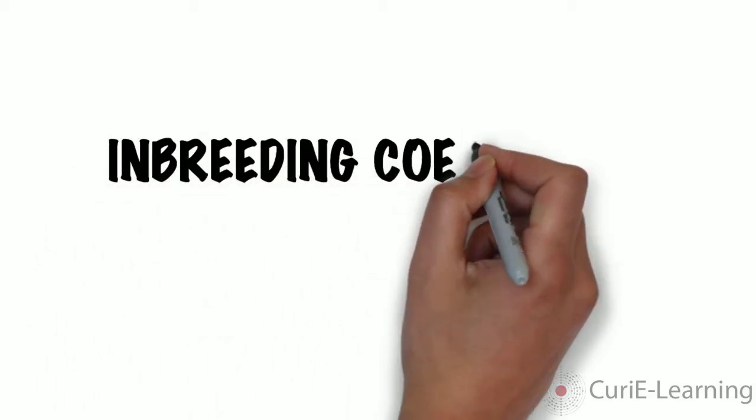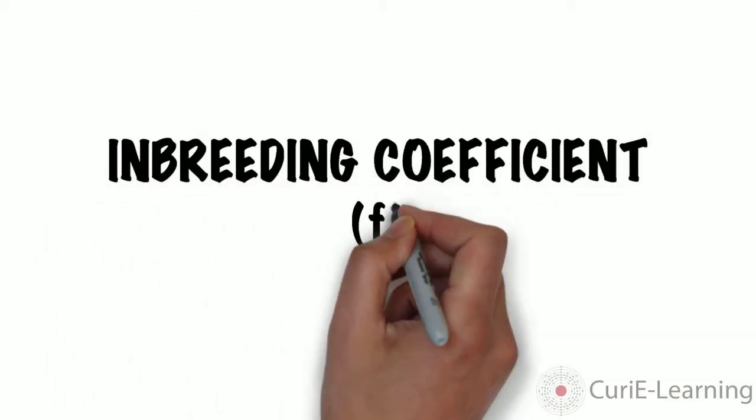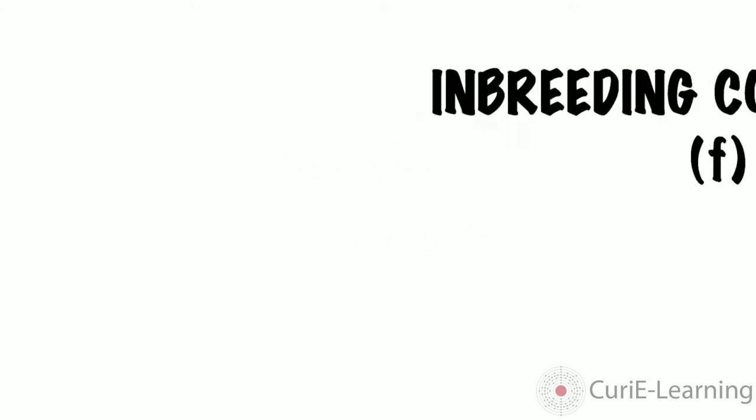In this video, we're going to talk about the inbreeding coefficient, which is a numerical estimate of inbreeding in a population and is represented by the letter F.